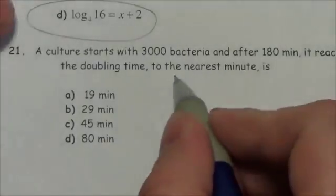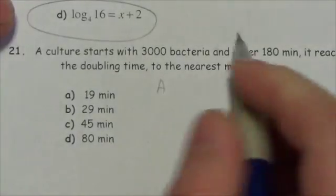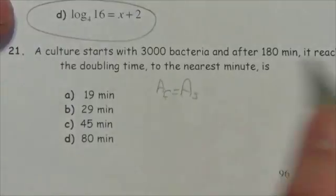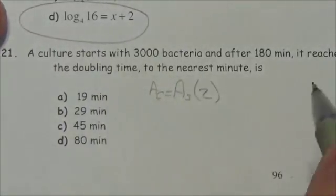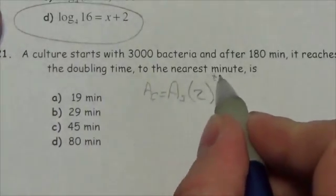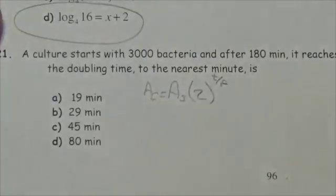We'll use the formula where the final amount equals the initial amount times 2 to the power of t over p, where p is the period of growth.